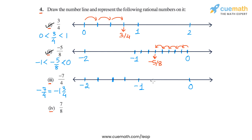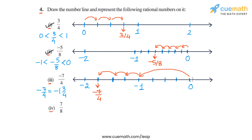Starting from 0, if we first make a full jump of one unit to the left, and then three jumps of 1 by 4, we reach this point here, which is minus 1 and 3 by 4, or minus 7 by 4. You could also do this by dividing the interval between minus 1 and 0 into four equal parts, and then making 7 jumps of 1 by 4 to the left — 1, 2, 3, 4, 5, 6, 7 — arriving at the same point, which is minus 7 by 4.